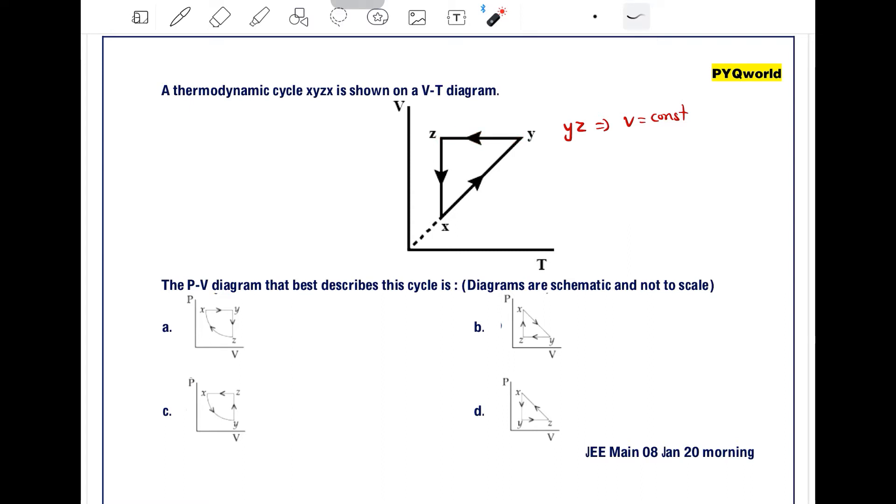Temperature is decreasing. So for y-z, volume is constant here also. Option number B and option number D can't be the options, because in this case volume is changing. Now there is a confusion between option A and C.